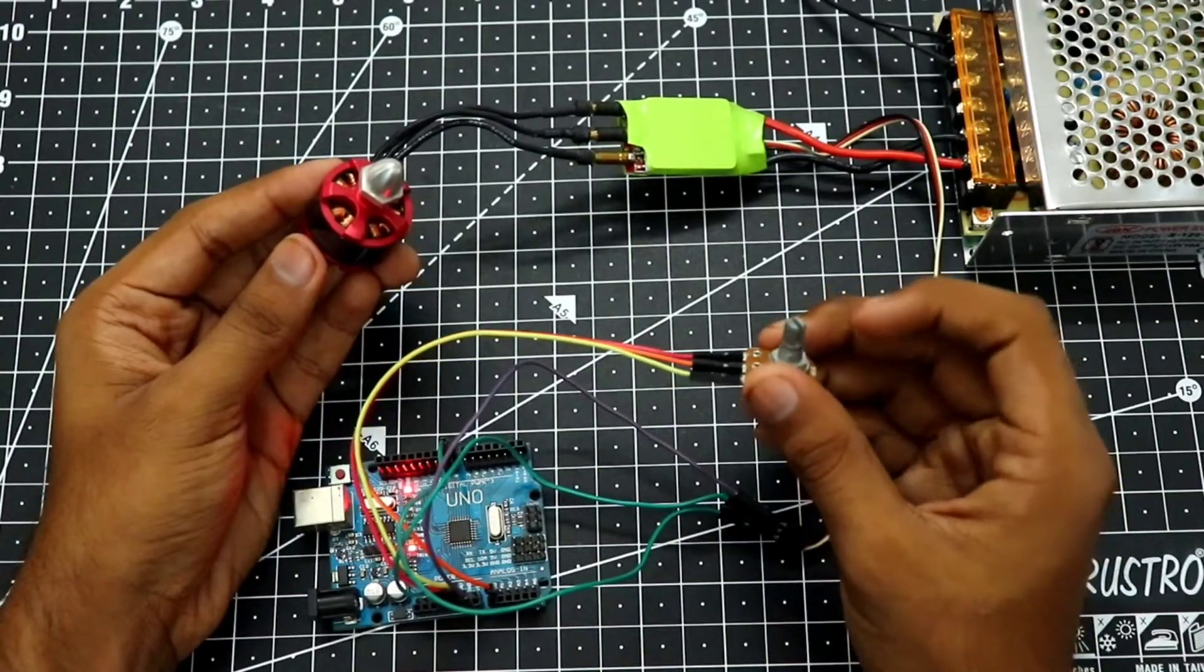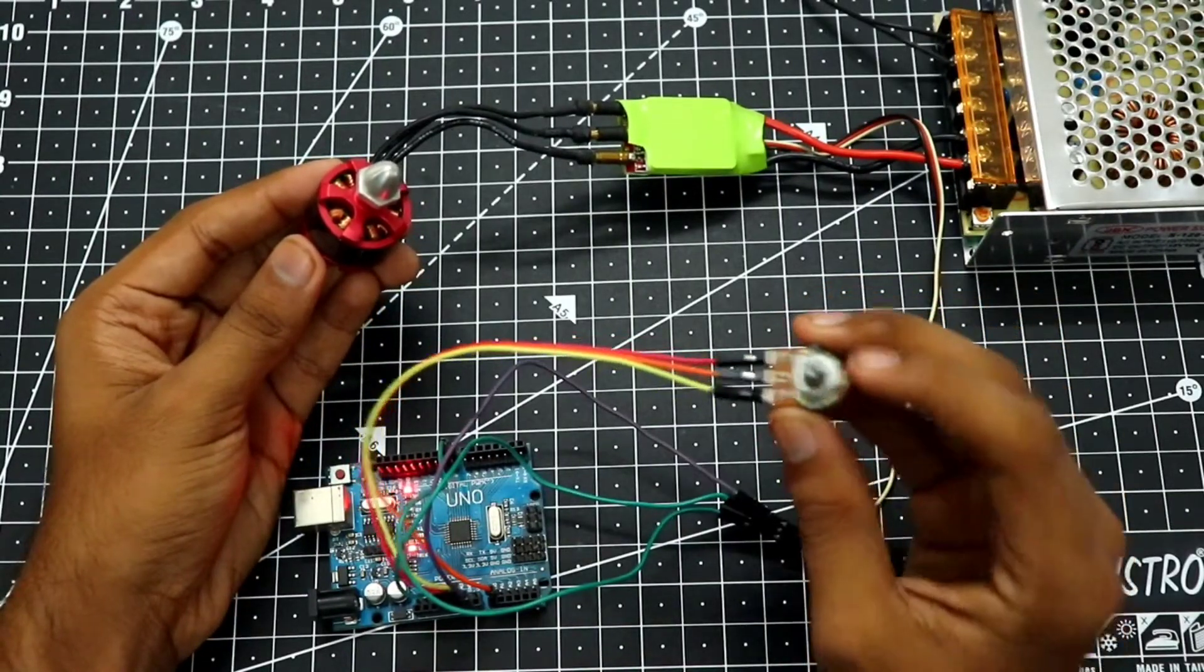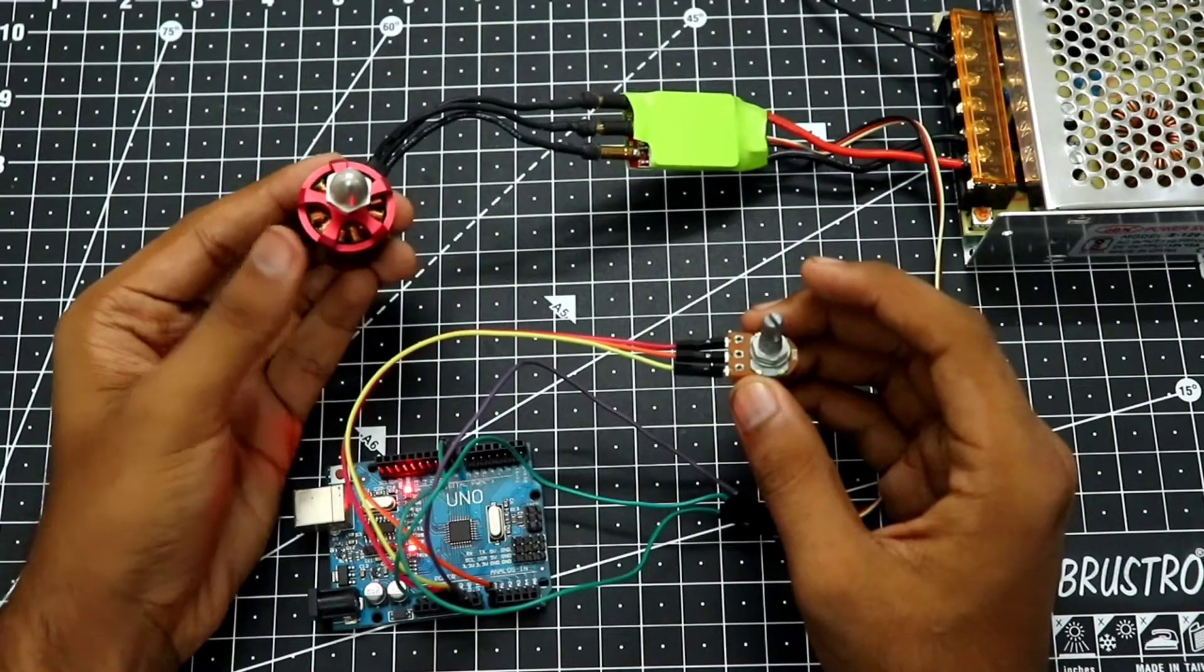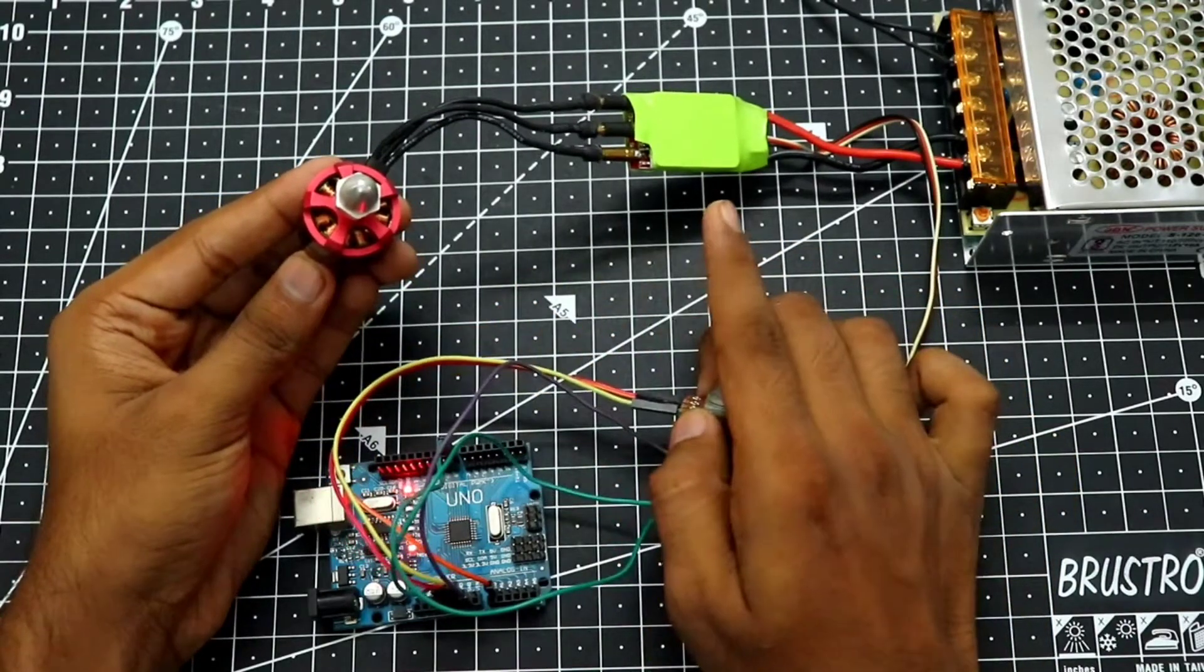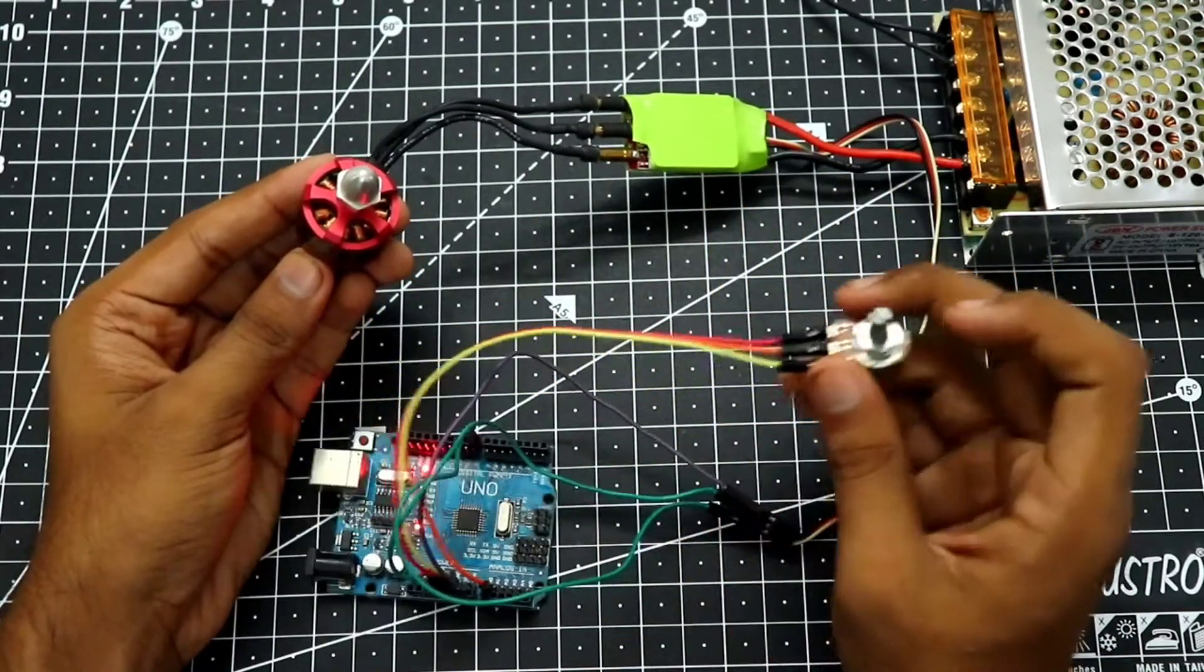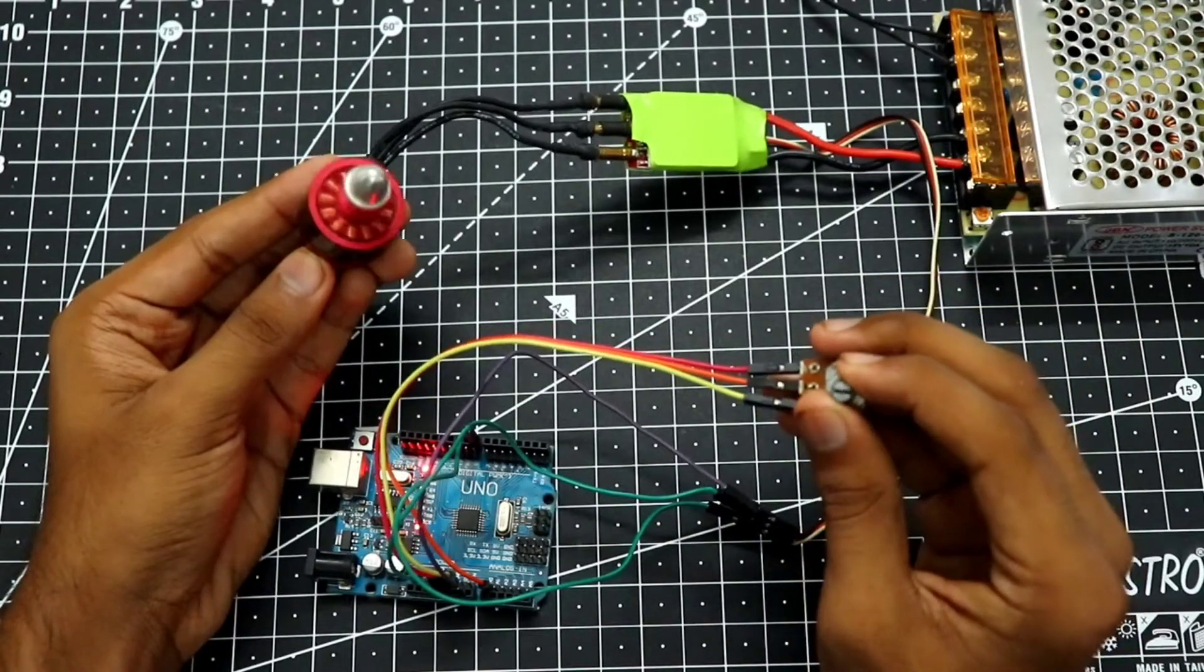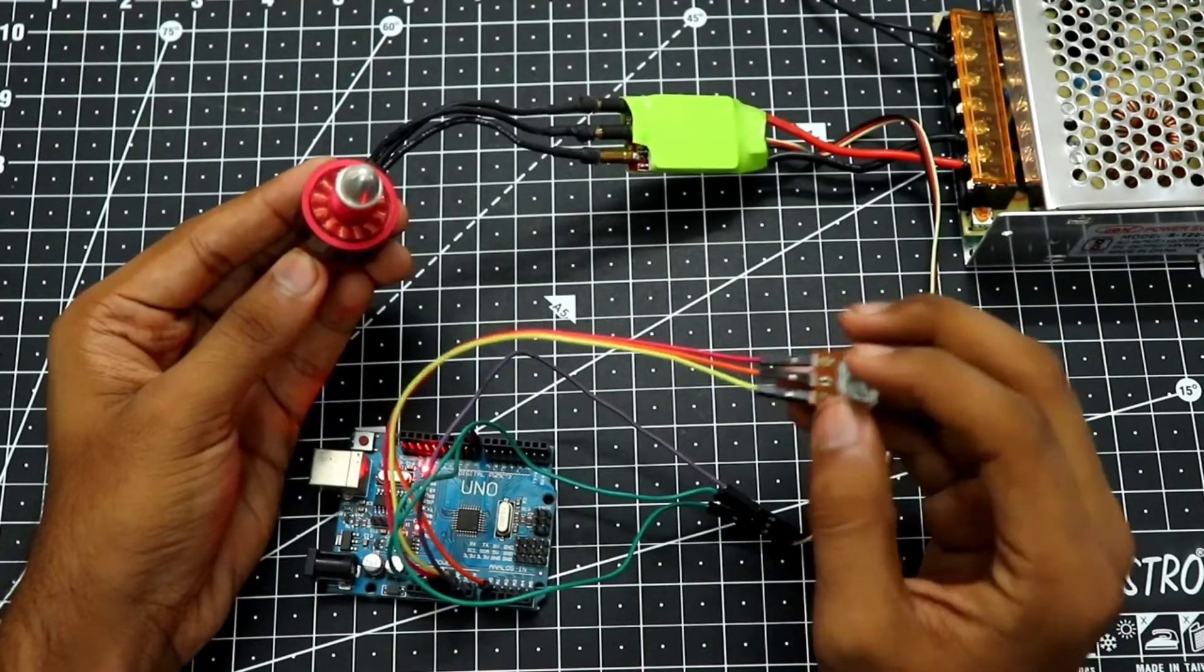Hey guys, Harsh here, back in the video. Today I'm going to show you how you can use this potentiometer to control a brushless motor. I have hooked up my brushless motor to the ESC and to the power supply and to the Arduino. Once you turn the knob, the motor will start to spin. Let's get started.